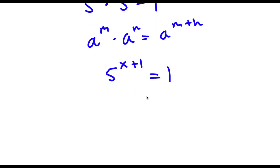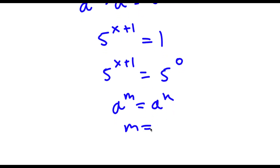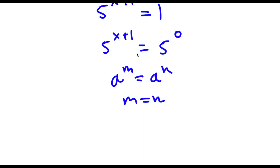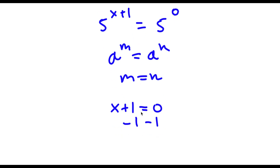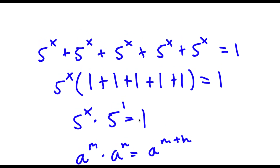Now 1 is the same thing as 5 to the power of 0, because anything to the power of 0 equals 1. Using the rule that if a to the power of m equals a to the power of n then m equals n, we get x plus 1 equals 0. Subtracting 1 from both sides gives x equals negative 1.